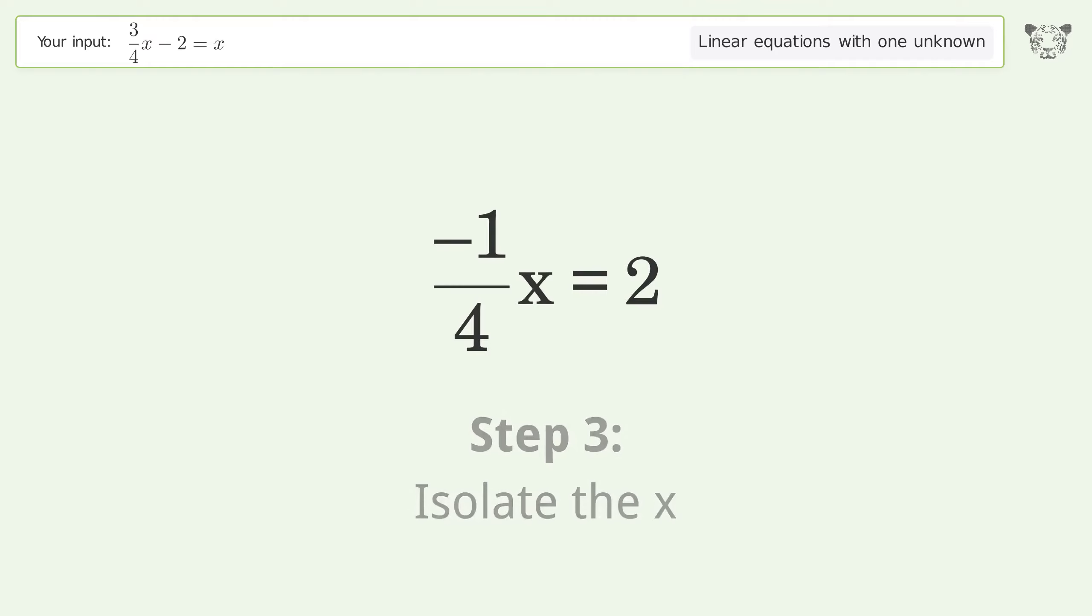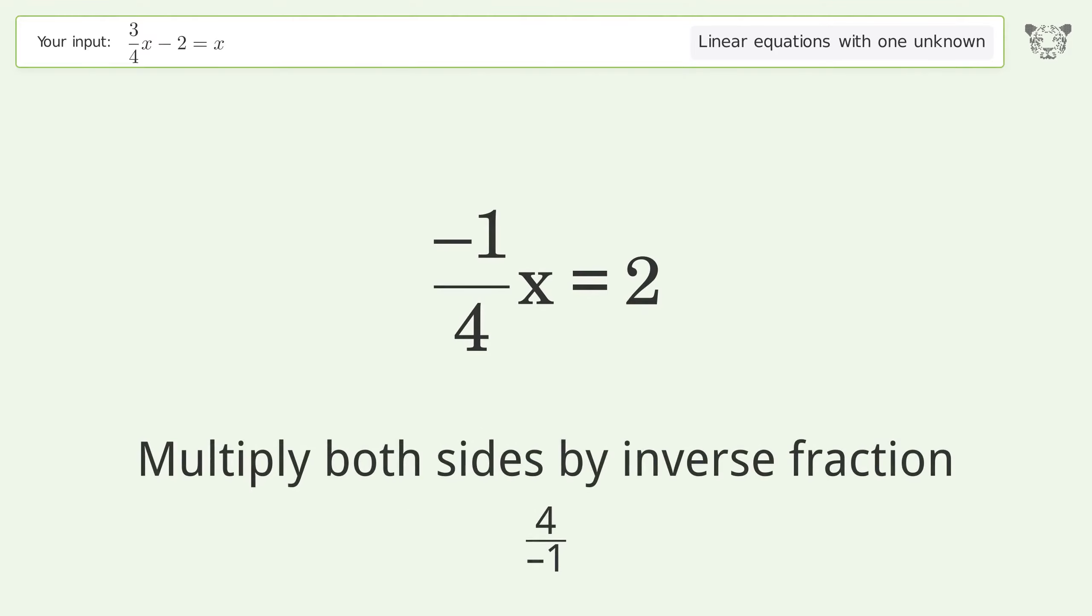Isolate the x. Multiply both sides by inverse fraction 4 over negative 1.